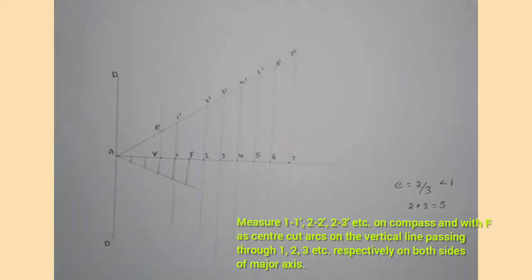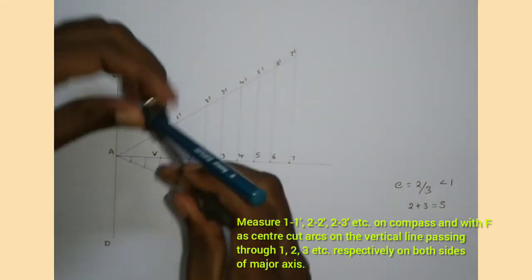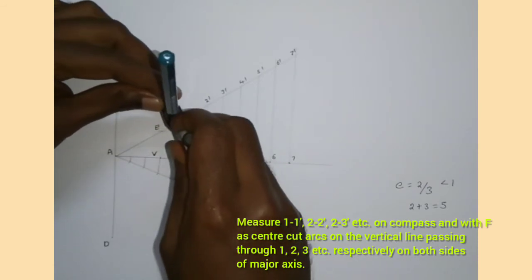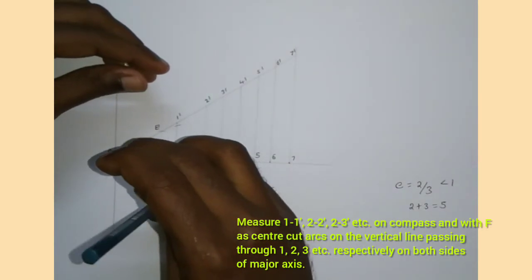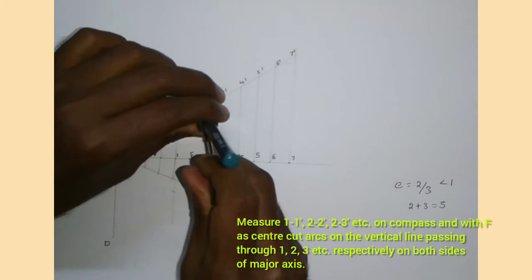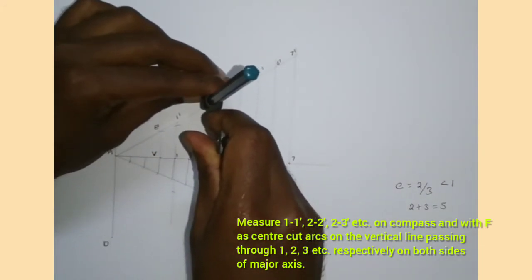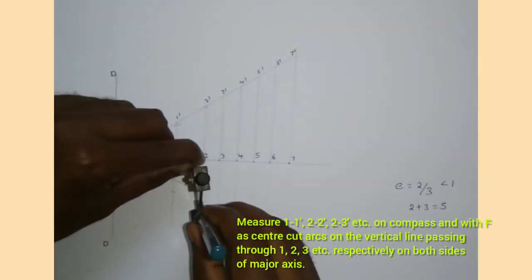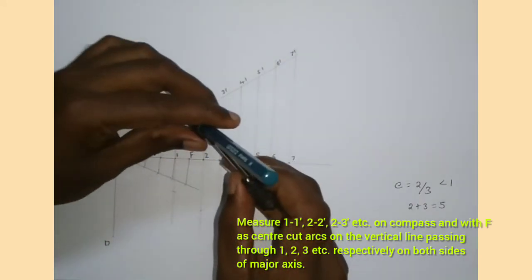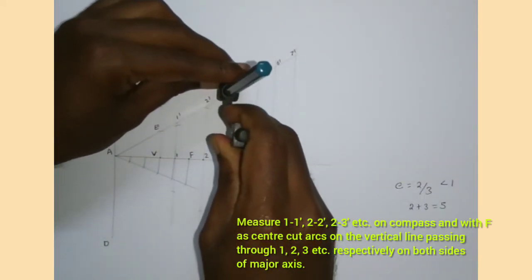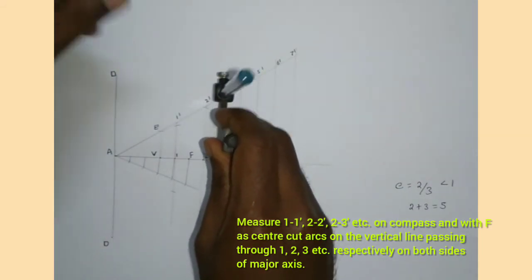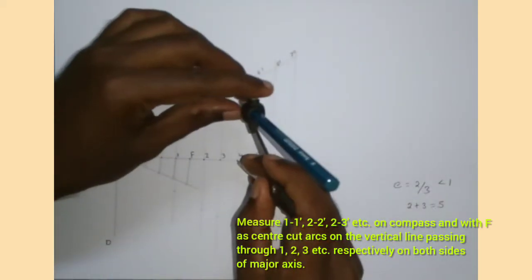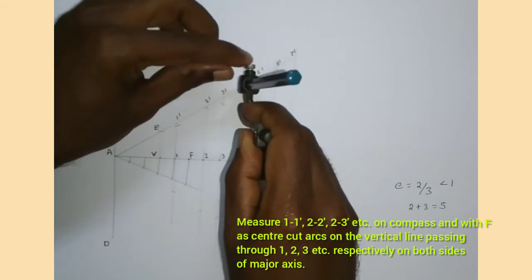Now I am measuring the length 1-1' on the compass and with F as center I am cutting an arc on the vertical line passing through point 1, getting two arcs — one upper and one lower. Similarly, I measure 2-2' and cut arcs on the vertical line through point 2 with F as center. I repeat this for 3-3', then for points 4, 5, 6, and 7.